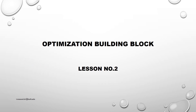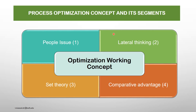Optimization Building Block, Lesson No. 2: Process Optimization Concept and its Segments. The Optimization Working Concept has three pillars: People Issue, Lateral Thinking, Set Theory for Process Optimization, and Comparative Advantages when the Optimization Process is being implemented. First we will discuss People Issues, then Lateral Thinking, then Theory about Optimization, and then Comparative Advantages in Process Optimization Concept.